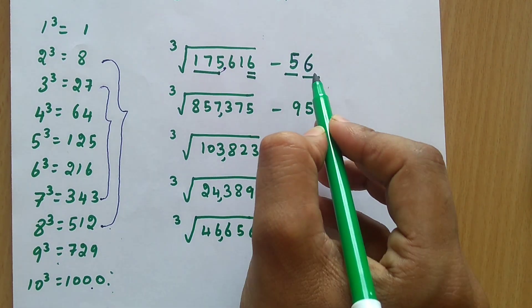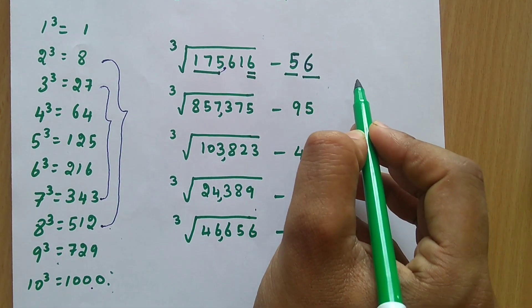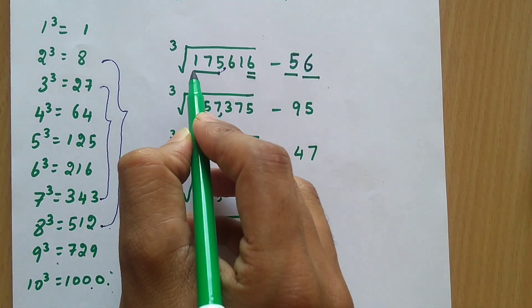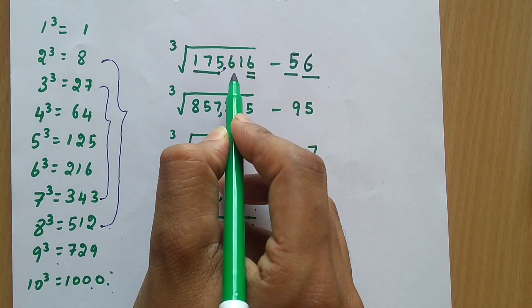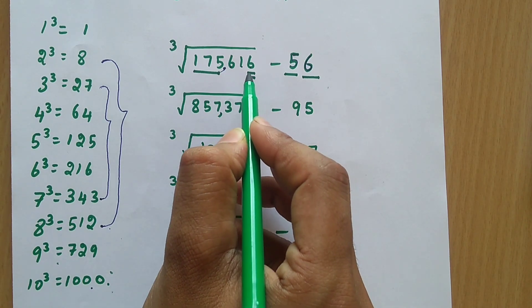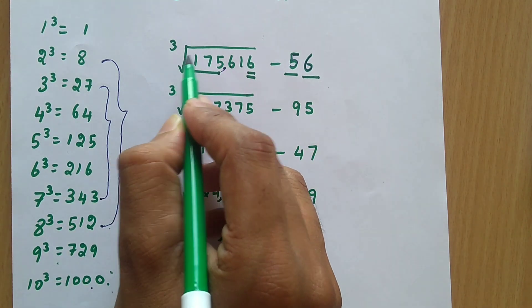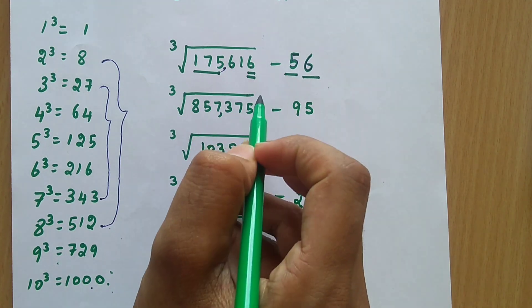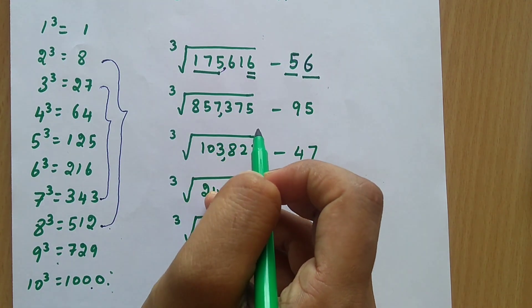So the answer is 56. If you multiply 56 three times, you will get 175616. And if you take the cube root, you will get 56 as the answer.